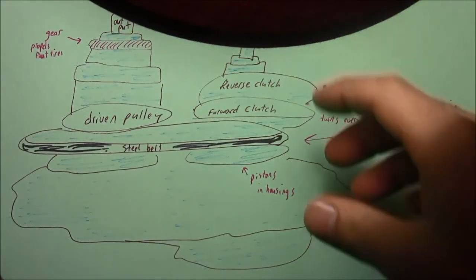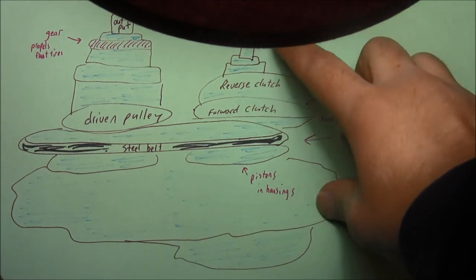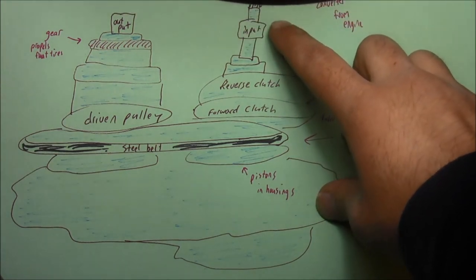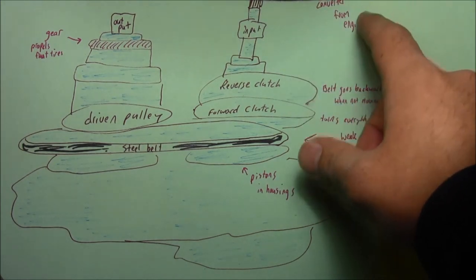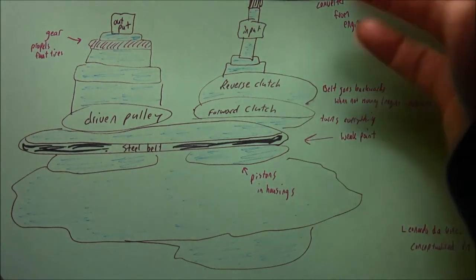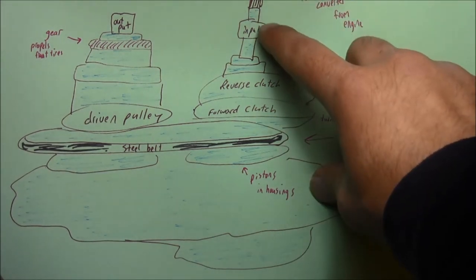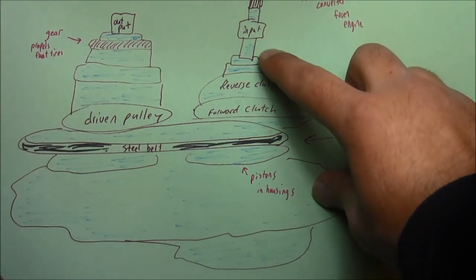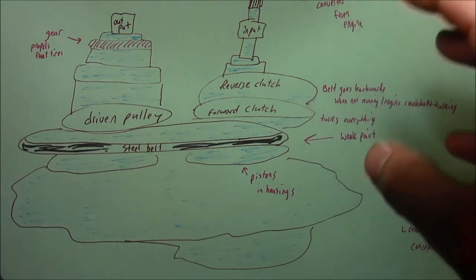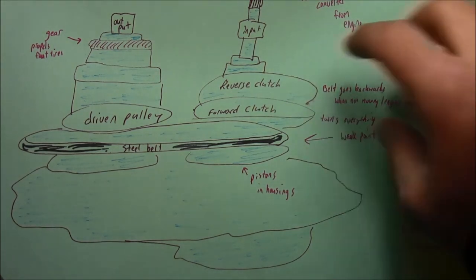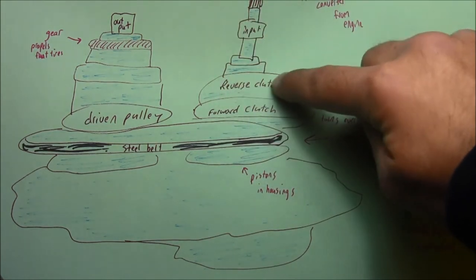In this overview, you have your input shaft which comes from your torque converter, and your torque converter is from your engine. So engine, torque converter, input shaft. It goes down to the reverse clutch. The belt goes backwards when the reverse clutch is not moving.